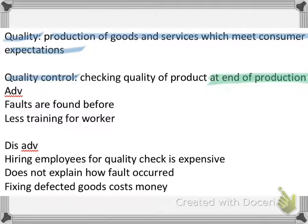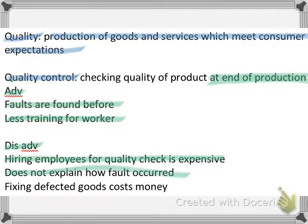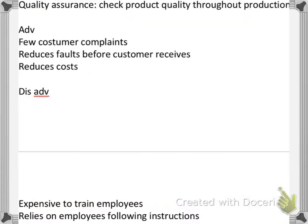The advantage of quality control is that faults are found before the customer receives the product, and there will be less training required for workers compared to other quality production methods. The disadvantages are that hiring employees for quality checks is expensive, it does not explain how the fault occurred, and fixing defective goods costs a lot of money.